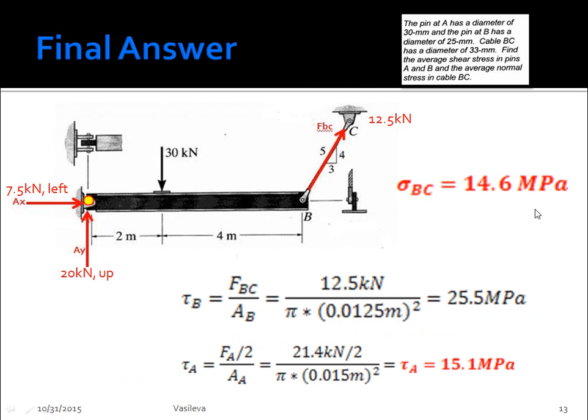So here I just put all of our answers to the question. They wanted the average normal stress at BC, which we have here, and then the shear in A and B. And once again, this is a really good test question.